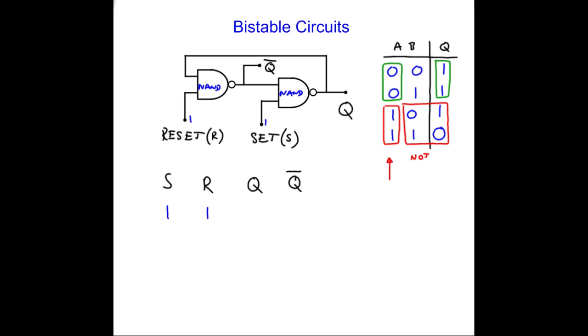Suppose that Q is logic 1. 1, 1. The 1 is fed back round. This is 1. This is already 1. 1 and 1 give me 0. Q bar is 0. Q bar is 0. 0 and 1 give me logic 1. So everybody's happy. That one works.